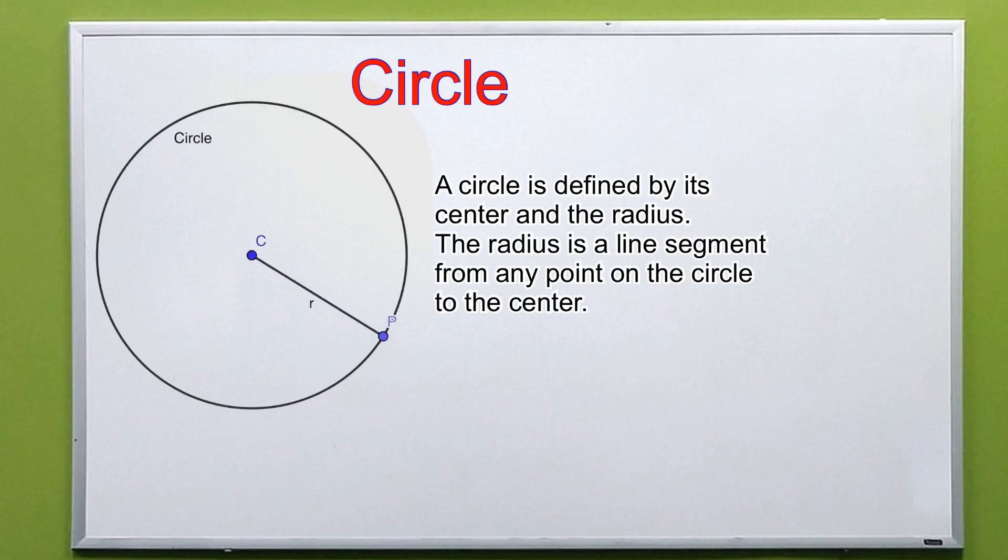A circle is defined by its center and the radius. The radius is a line segment from any point on the circle to the center. We name a circle based on the letter assigned to its center. In the given example, we have circle c, with line segment cp as the radius.